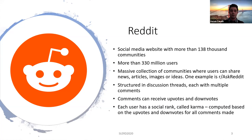Each subreddit is structured as a set of discussion threads, each with multiple comments. Each comment can receive up votes and down votes based on user preferences. Importantly, based on those votes, each user will have a so-called social rank, commonly called Reddit karma, which is an aggregation of all these votes. This is the thing that we wanted to predict.